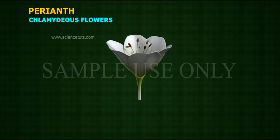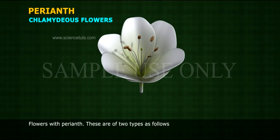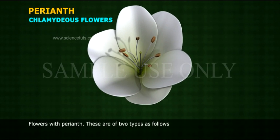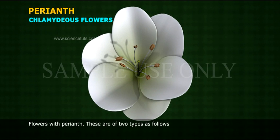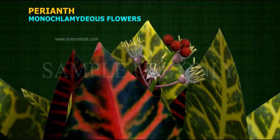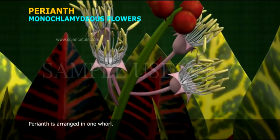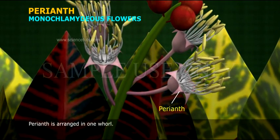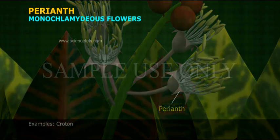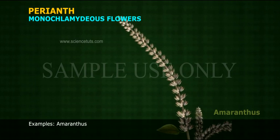Chlamydeous flowers: Flowers with Perianth. These are of two types. First, Monochlamydeous flowers, in which Perianth is arranged in one whorl. Examples: Croton and Amaranthus.